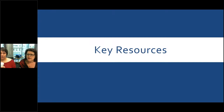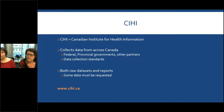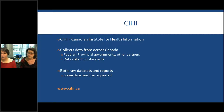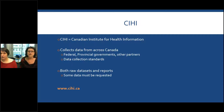The first key resource we'd like to talk about is CIHI — the Canadian Institute for Health Information. They collect information from across Canada, both federal and provincial, as well as from other partners like hospitals. They have rigorous data collection standards. From CIHI you can get both raw data sets as well as reports. In many cases it's freely available, but sometimes you have to actually request the data and pay for it. This is the place to come if you're looking for Canada's health system or the health of Canadians. It's public health data, often aggregated at a federal level and published as a report — an example of a recent one is patient experience in Canadian hospitals.